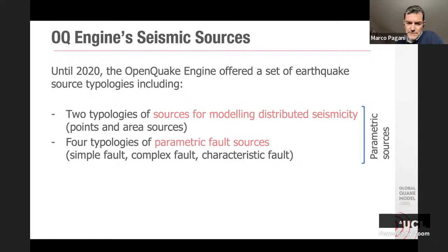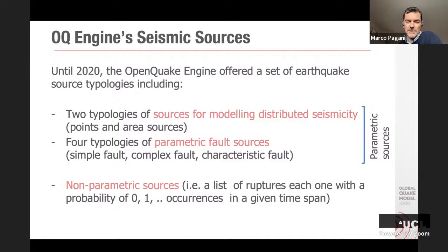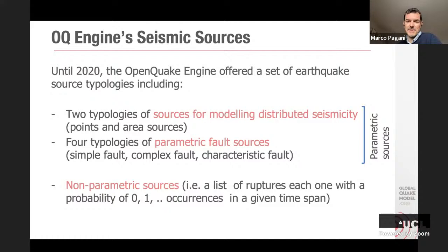In addition to those, we had a typology of source called a non-parametric source. In this case, what we do is provide to the engine a long list of ruptures for which the user must specify the probability of occurrence of zero, one, or two events in a given time span. It's a rather simple description of what can be a source used for probabilistic seismic hazard analysis, but it's rather complex in general to create — it requires some coding capability to implement those sources outside of the OpenQuake engine.